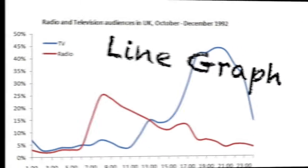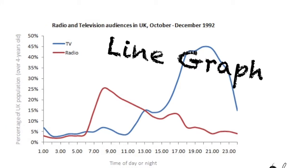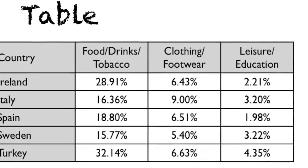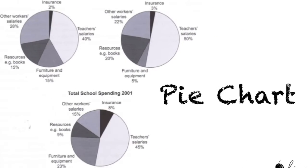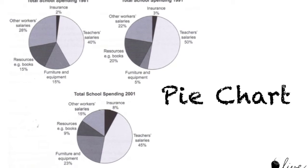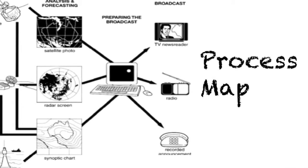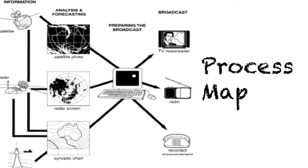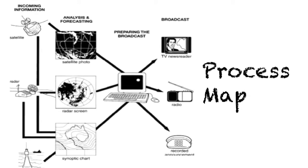And this is a line graph. And this is a table. And this is a pie chart. Last but not least, this is a process map. These are all the diagrams you may get in Writing Task 1.